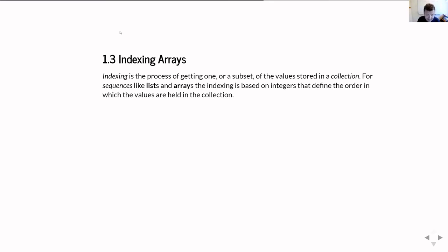Indexing is the process of getting one or a subset of the values stored in a collection. For simple Python sequences like lists, you can index with a single integer using square brackets. So if you do my_list[3], you're asking it to index that list with three. The slight complication is that Python always starts counting indexes at zero, so three gives you the fourth element, not the third.